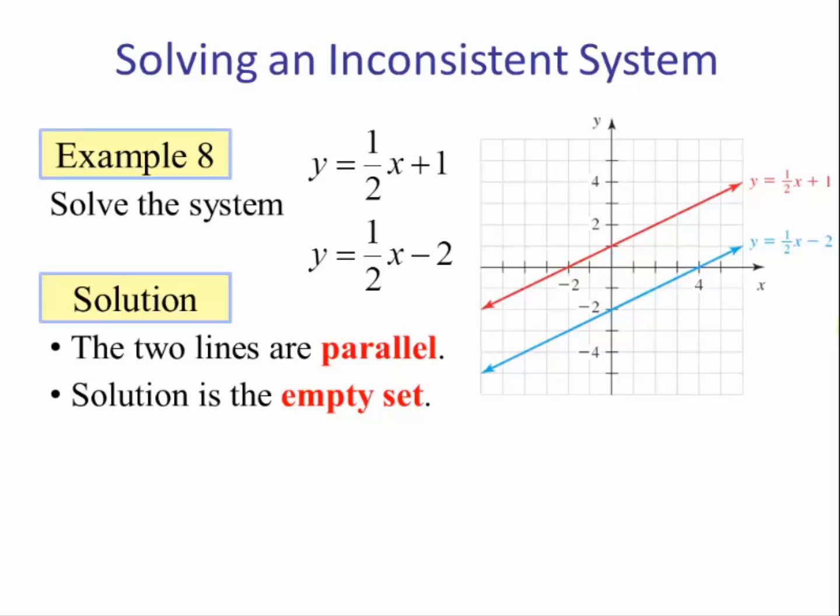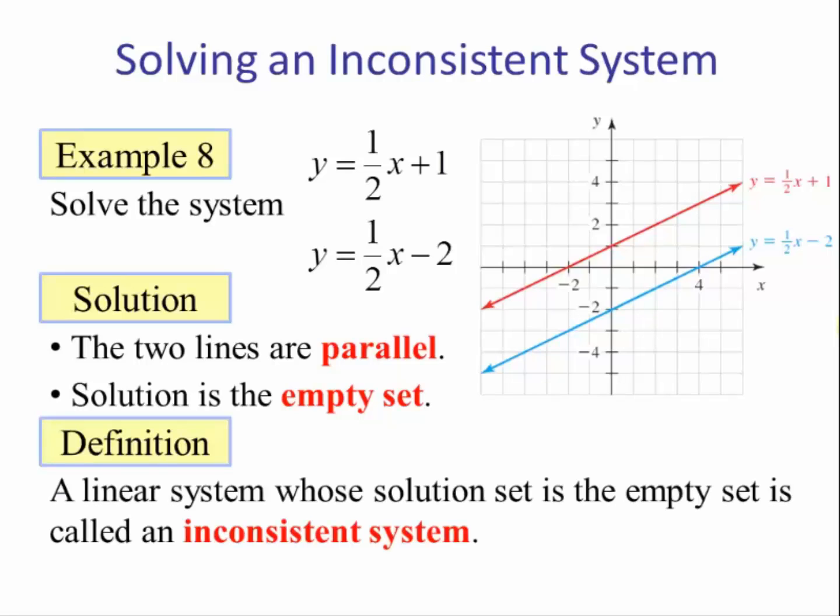Or, there is not an ordered pair, an x y, that will make both equations true. Definition: A linear system whose solution set is the empty set is called an inconsistent system.